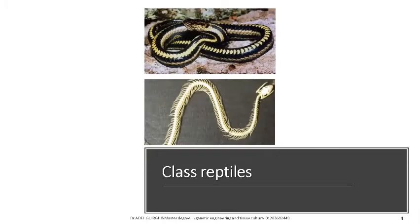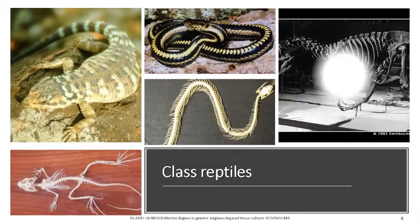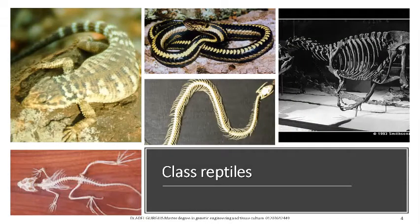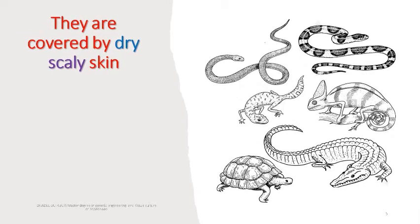Class reptiles include vertebrate animals. Look at the bony skeletons of a snake, a lizard, and the skeleton of dinosaurs. They are covered by dry, scaly skin.